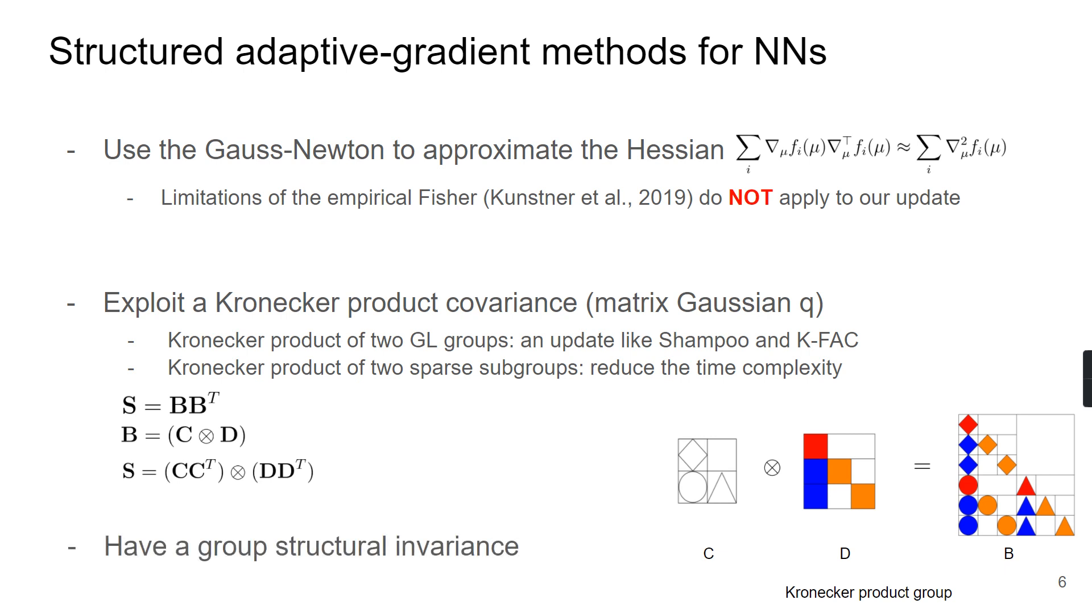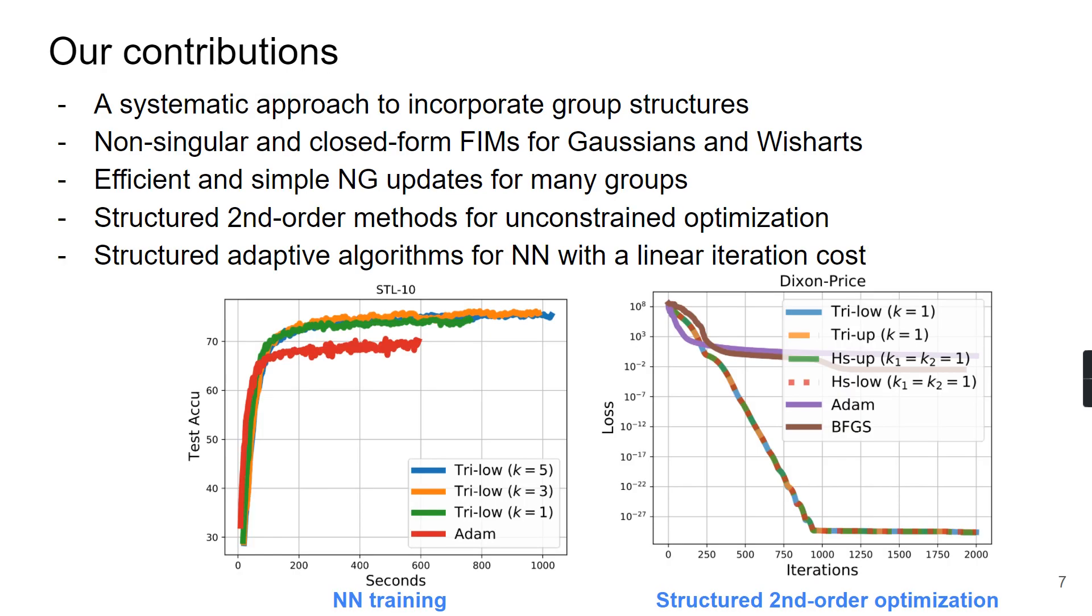Last but not least, our update also has a group structure invariance, and existing structured methods such as K-FAC, Shampoo, and BFGS do not have this invariance property. To wrap up, we propose a new natural gradient measure. It is a systematic approach to incorporate group structures, and the structure obtained from this approach gives us a non-singular and closed-form Fisher information matrix for Gaussians and Wisharts. And we can also extend this idea to mixture cases to handle multi-modality. And it gives us an efficient and simple natural gradient update for many group structures. And we show that our natural gradient update can be used to design structured second-order methods for unconstrained optimization and structured adaptive algorithms for neural networks with a linear iteration cost.